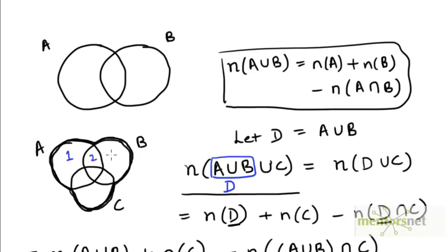This is region 1, region 2, region 3, region 4, region 5, region 6, region 7. We want to make sure that in the expression we will be deriving on the right-hand side, the elements in each region are counted exactly once — not double counted, triple counted, or under counted.